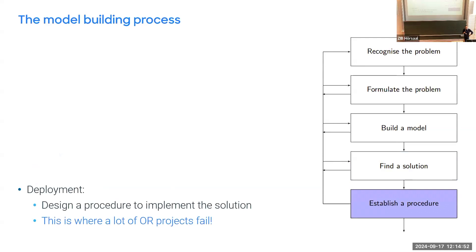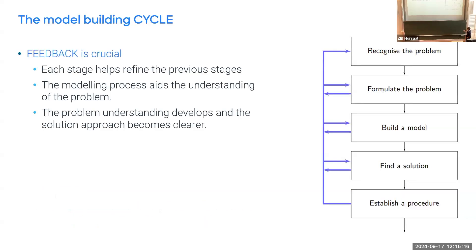At the very end, if you have such a solution procedure, you can try to bring the solution back into practice — but that involves many things and can be where a lot of projects fail. You've solved the problem mathematically, but that doesn't mean you can convince practitioners to actually use your solution. You often need help from non-mathematicians too. The important part is all these feedback arrows, because this is a feedback loop — each step helps refine previous stages, and that's why it's important not to hard-code every decision but to leave flexibility.